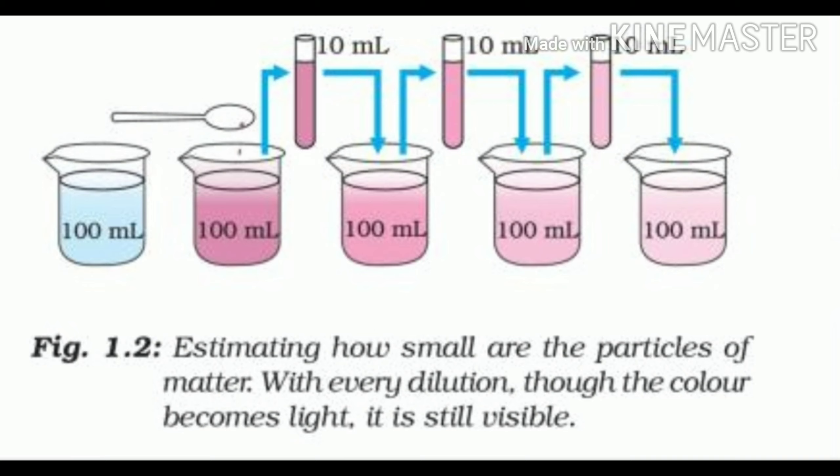The same activity can be done using 2 ml of Dettol instead of potassium permanganate. The smell can be detected even on repeated dilution.